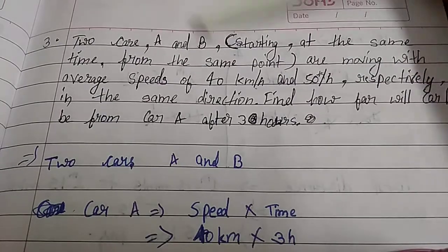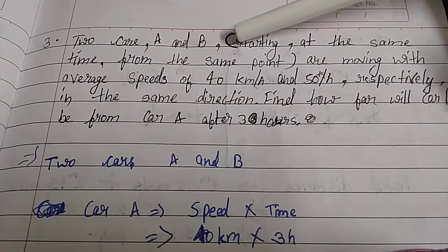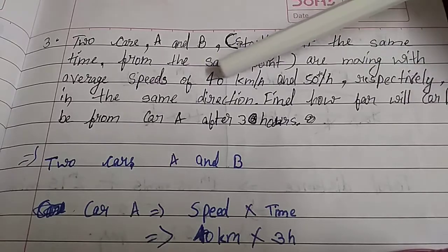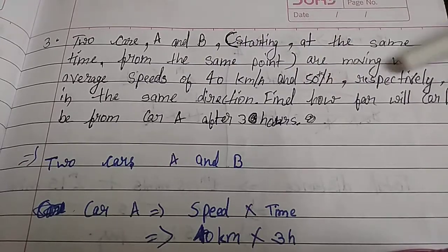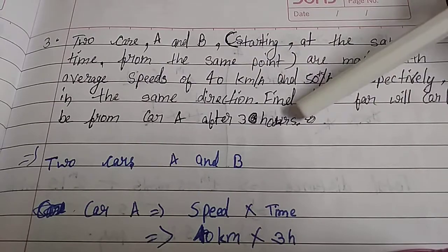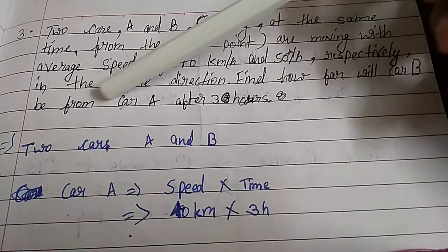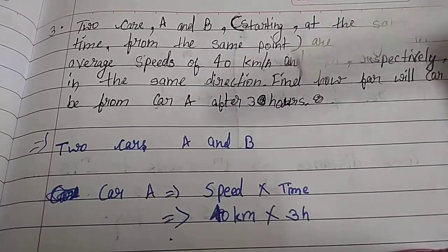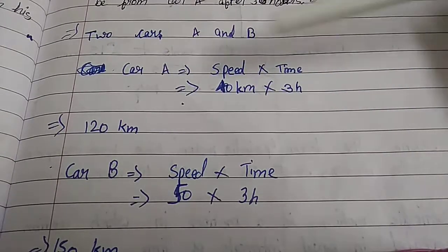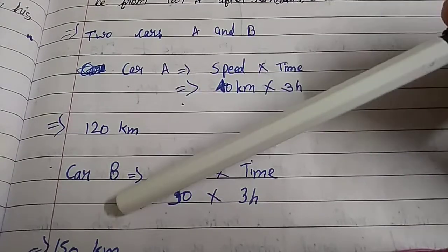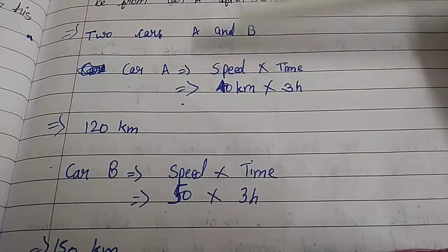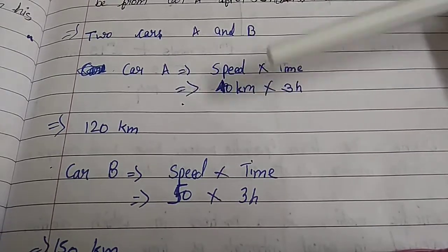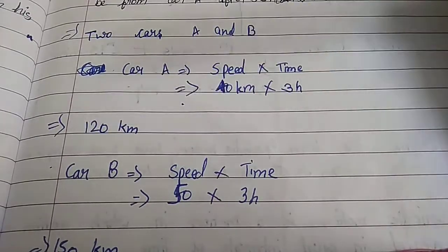Third question: Two cars A and B, starting at the same time from the same point, are moving with average speeds of 40 kilometers per hour and 50 kilometers per hour respectively in the same direction. Find how far will car B be from A after 3 hours. Don't worry if the questions are big, there will be a small answer. First we write car A and B, then speed multiplied by time. Car A: 40 kilometers per hour times 3 hours equals 120 kilometers.